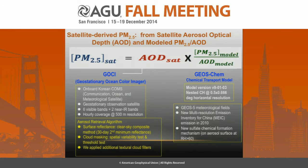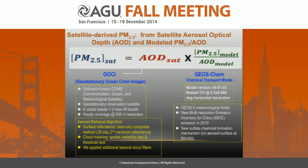To get PM2.5 from satellite remote sensing, here's the approach we use. Aerosol optical depth, or AOD, is a measure of light extinction in the atmospheric column due to the presence of aerosols like PM2.5, and that's a common retrieval in satellite remote sensing. We get satellite AOD and multiply it by a ratio of PM2.5 to AOD, which can be simulated by a chemical transport model, and we end up with satellite-derived PM2.5.